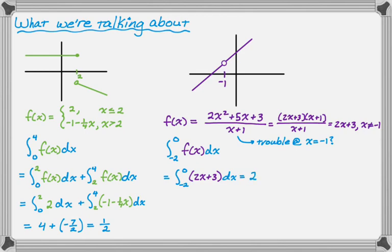So the main takeaway from this is if you have a removable discontinuity, you can actually integrate straight over it. You don't have to worry about it, just make sure it's actually removable and not a vertical asymptote.